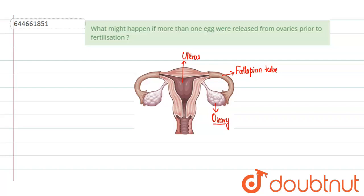It is normal that there will be only one ovulation, or one egg release, per menstrual cycle. The menstrual cycle is nothing but the cyclical changes taking place in the female reproductive tract. So, what would happen if more than one egg were released?